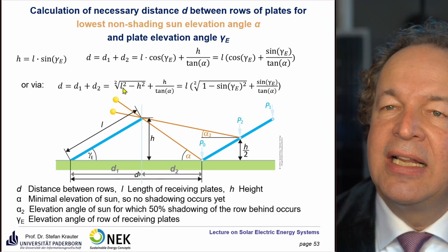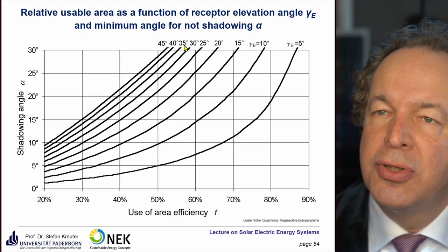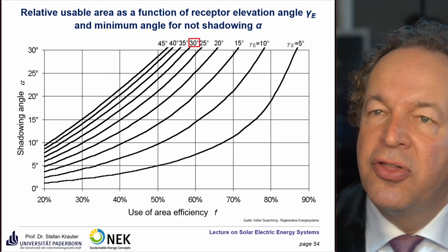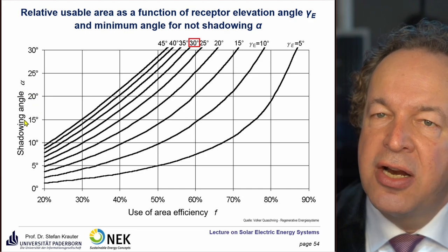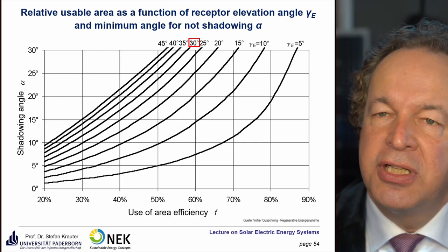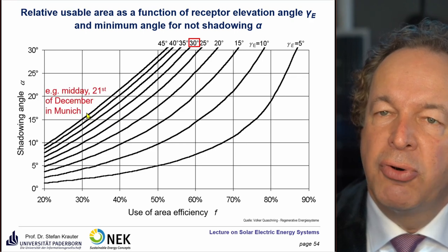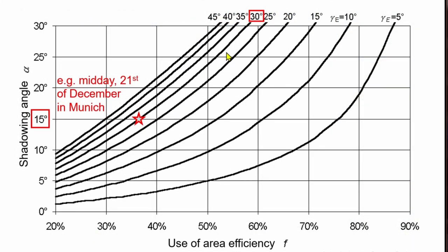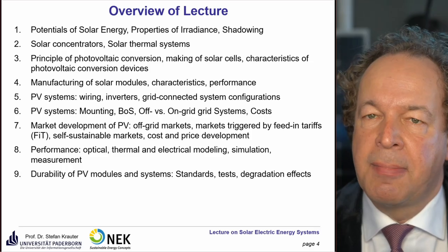For an optimal energy yield in central Europe, a module elevation angle of about 30 degrees is recommended. The shadowing angle — the sun's actual elevation angle on the 21st of December at midday — is approximately 14 to 15 degrees, for example 15 degrees in Munich. Combining these two values leads to a land use area of about 36%.